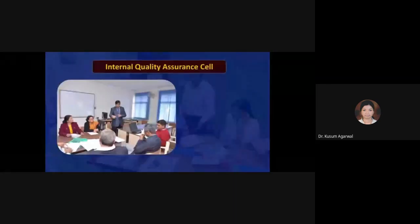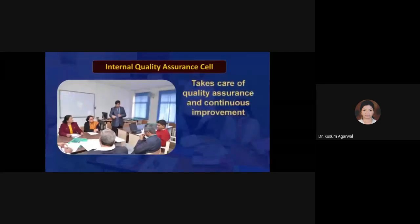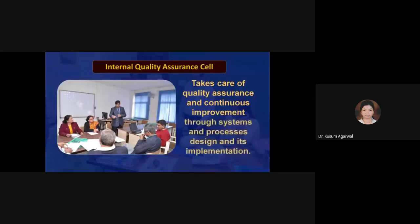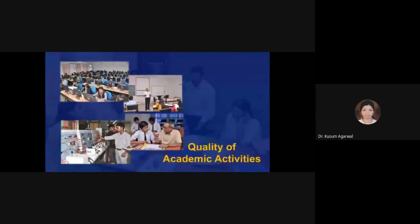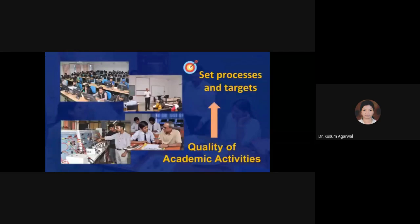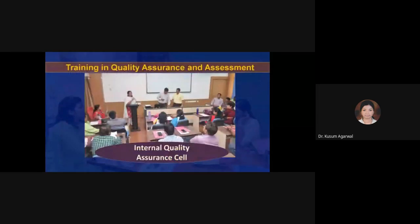In the polytechnic, an internal quality assurance cell is constituted which takes care of quality assurance and continuous improvement through systems and processes design and its implementation. It periodically audits the quality of academic activities against the set processes and targets. The members of the internal quality assurance cell are trained in quality assurance and assessment.